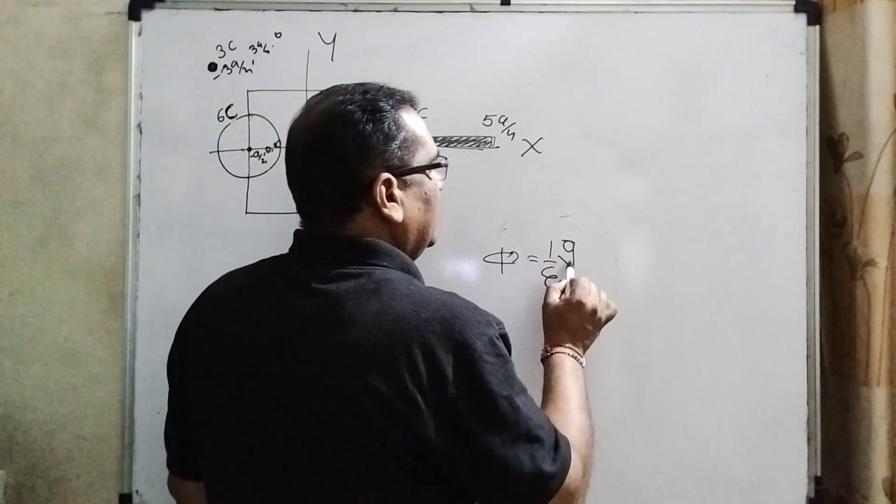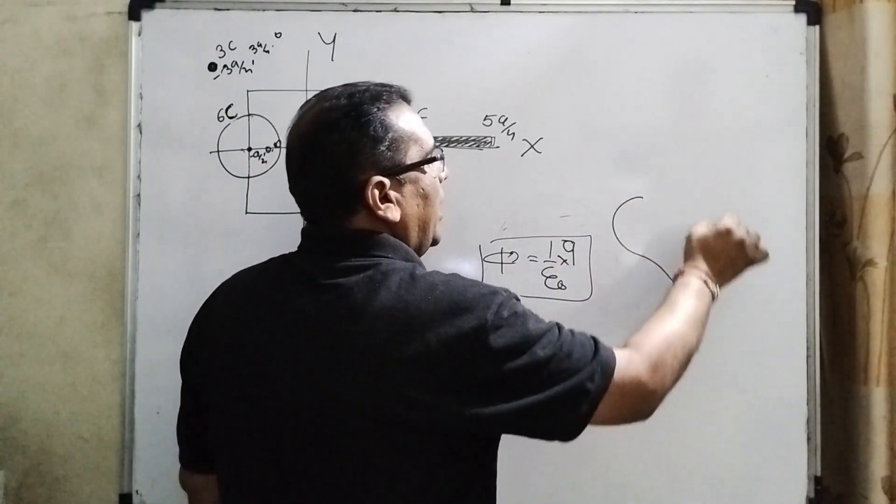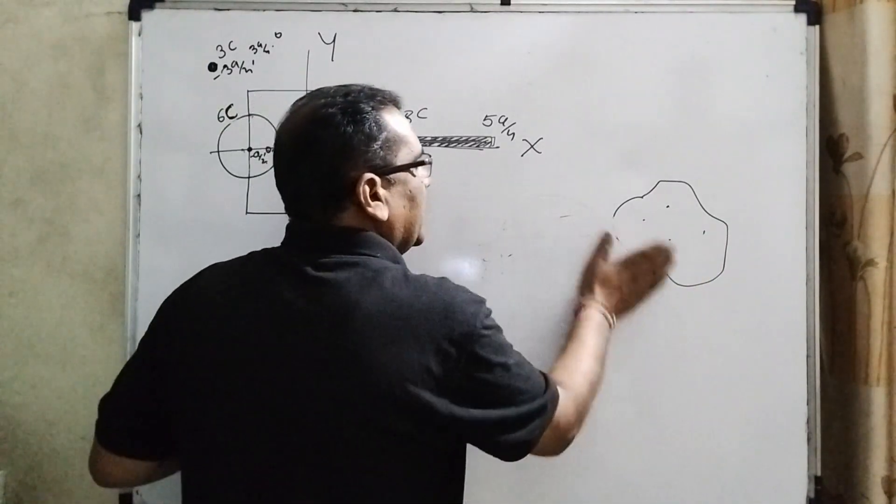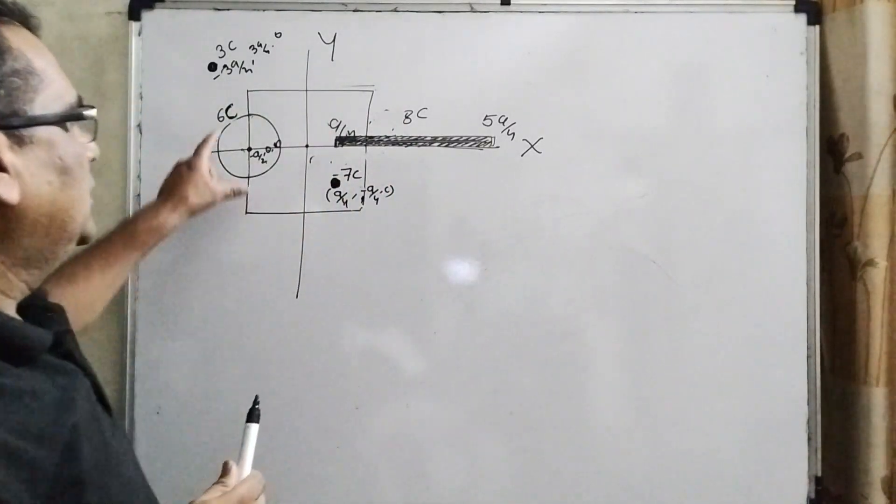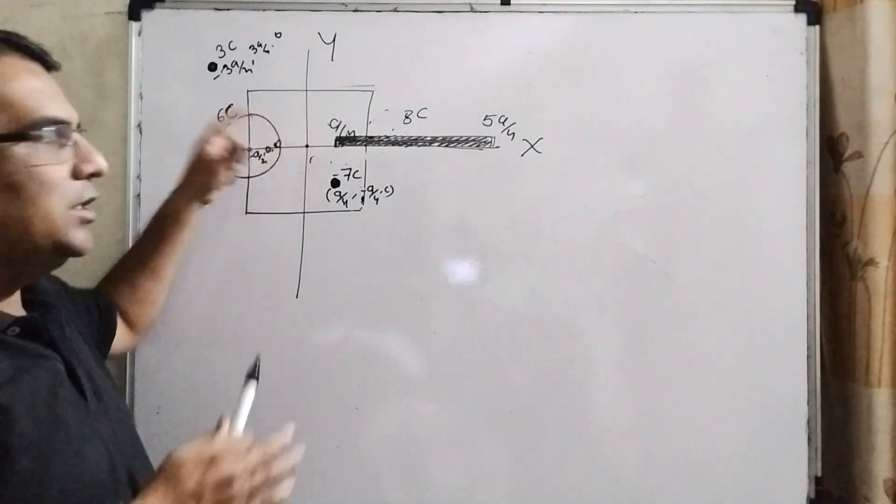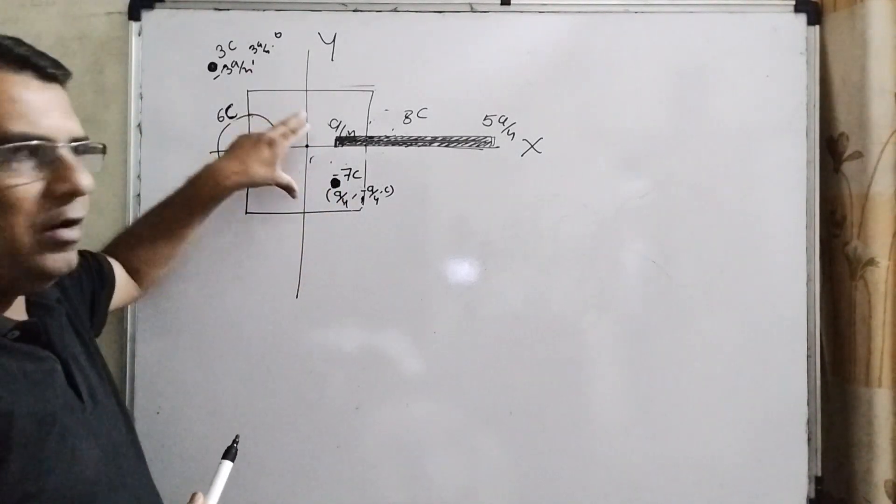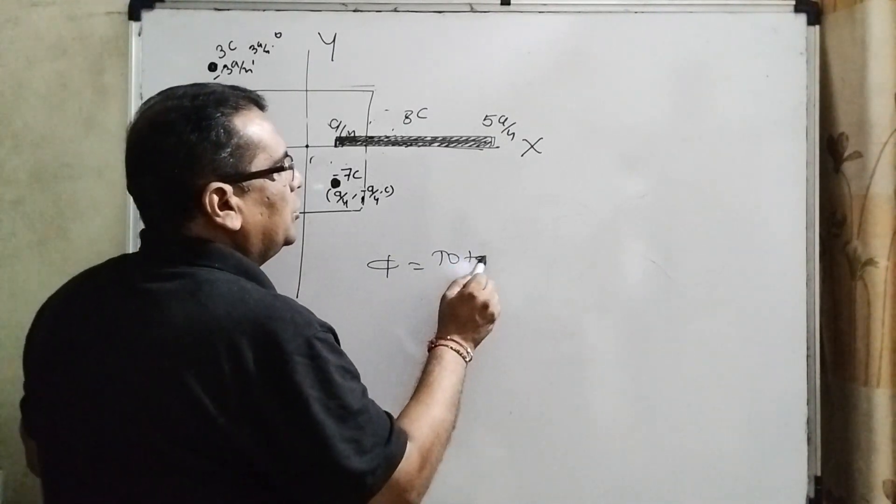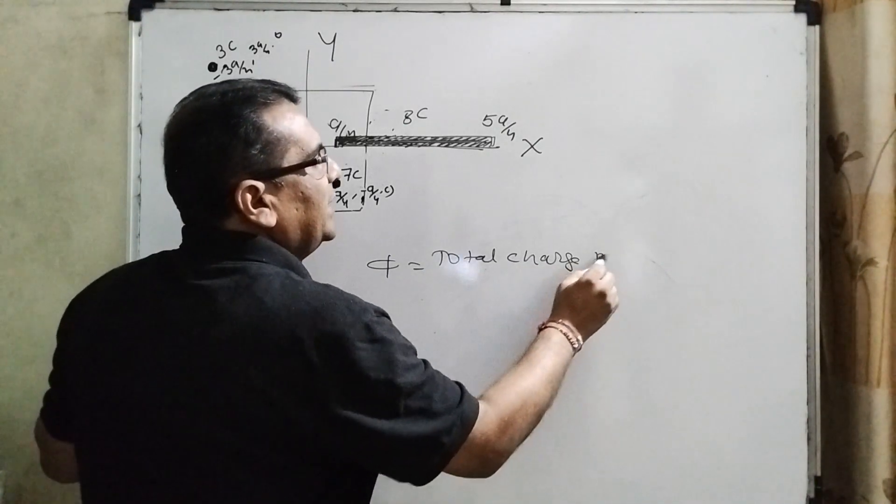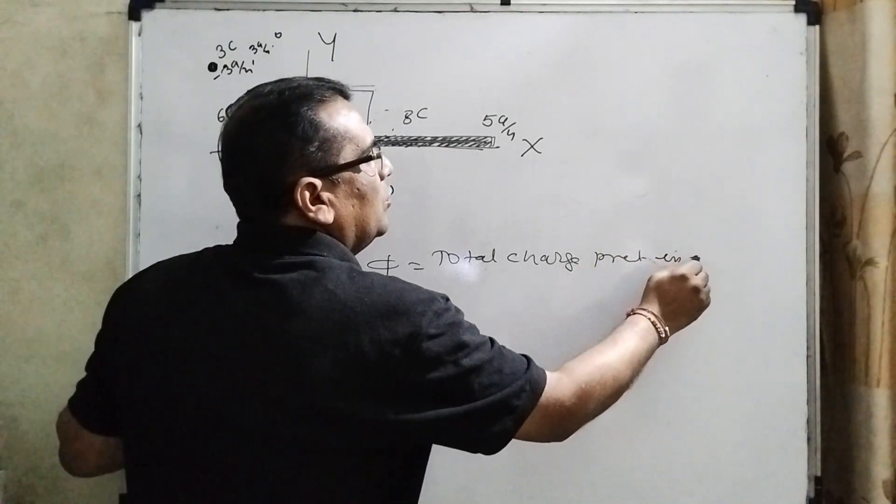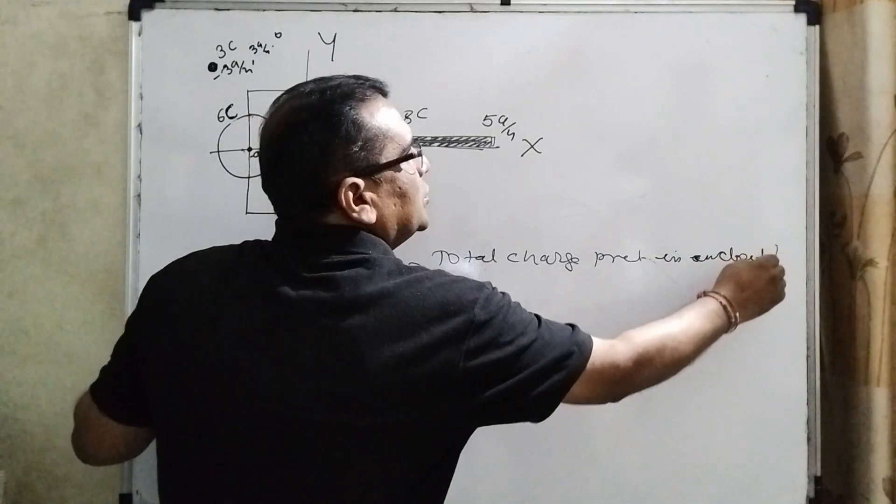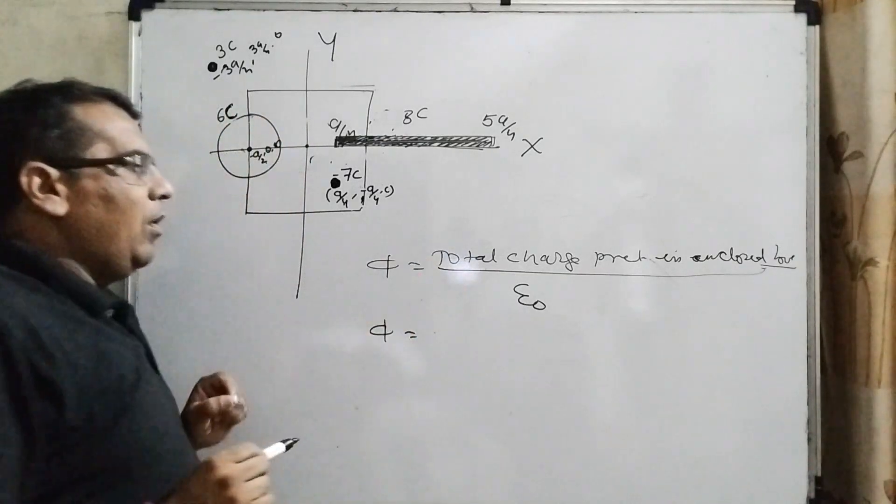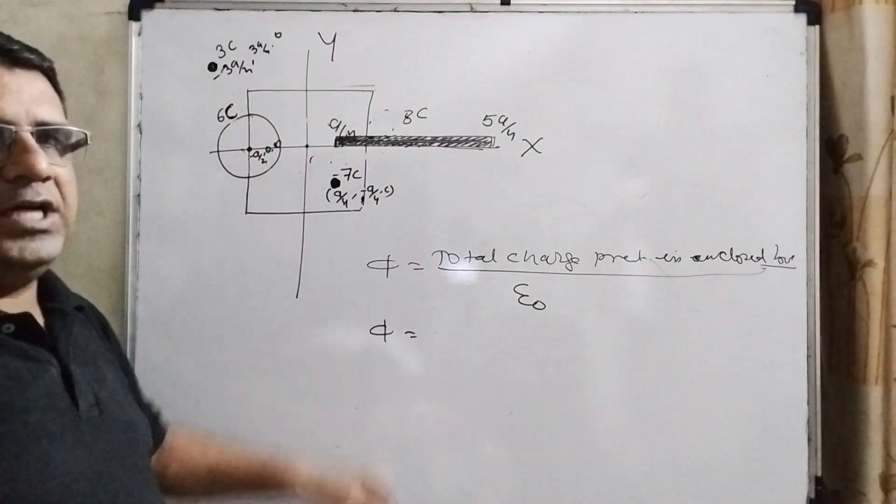Very important thing. What is the condition for Gauss's theorem? We should know how much charge is present in the closed body. So therefore, you should find out the sum of the total charge present in this cubical form. So now, electric flux equals total charge present in the enclosed body divided by ε₀. So now, one by one, we have to find out all the charges in the closed body.